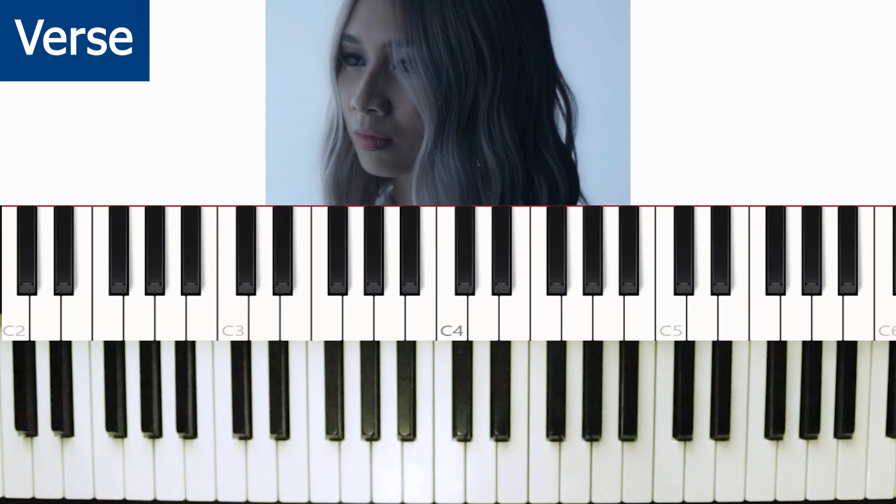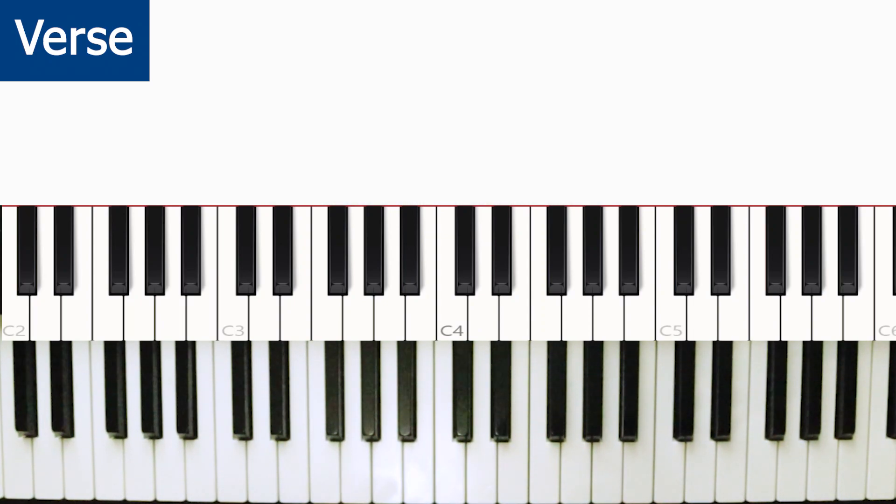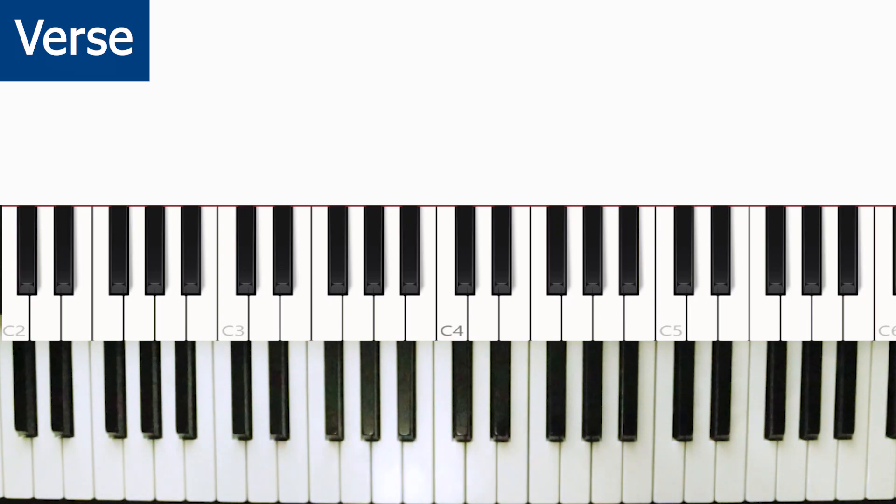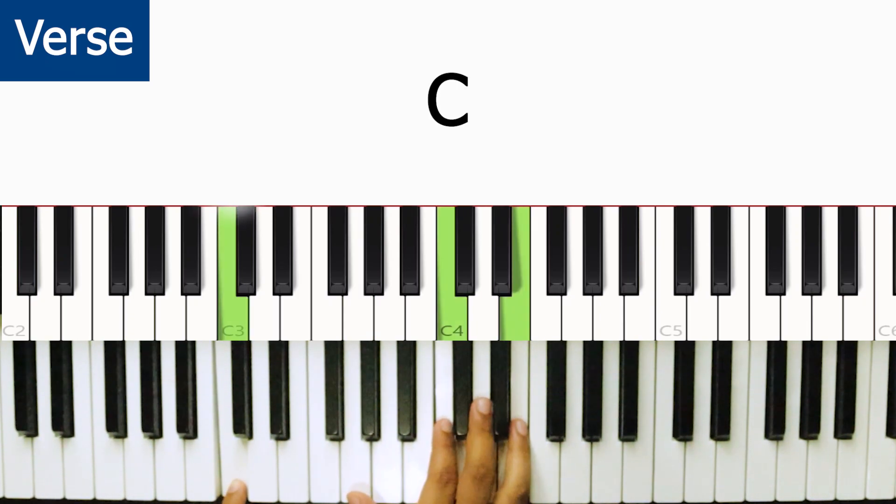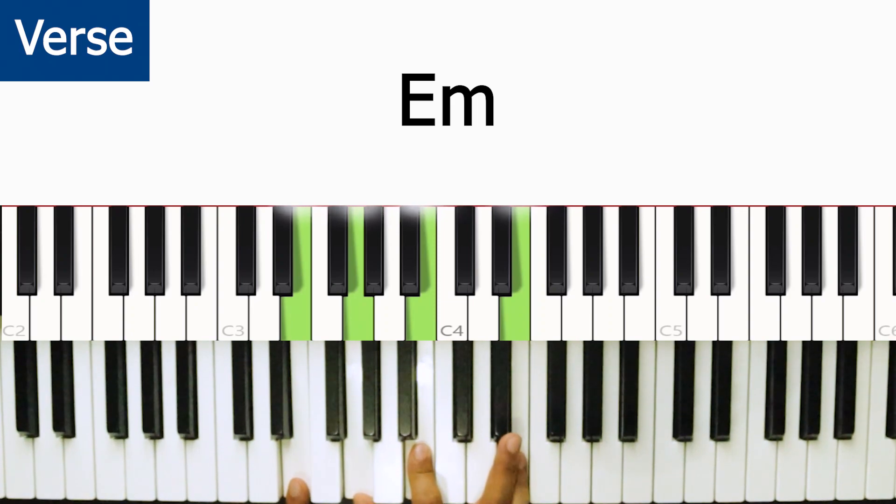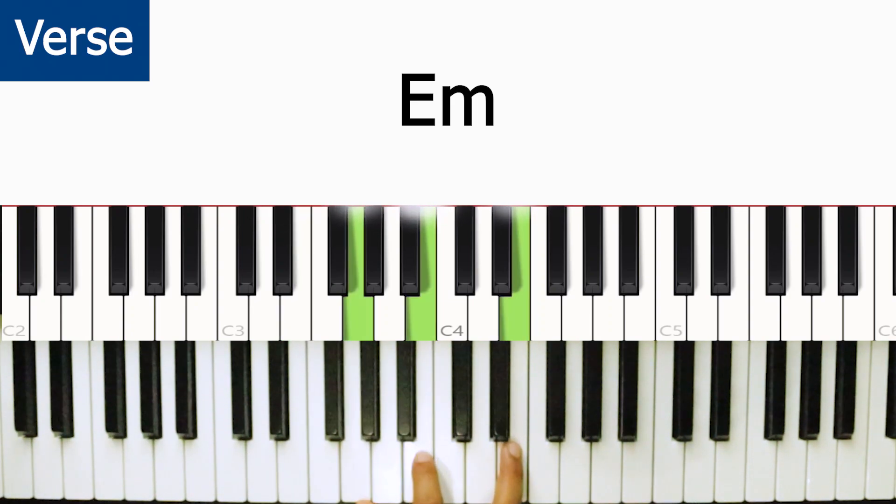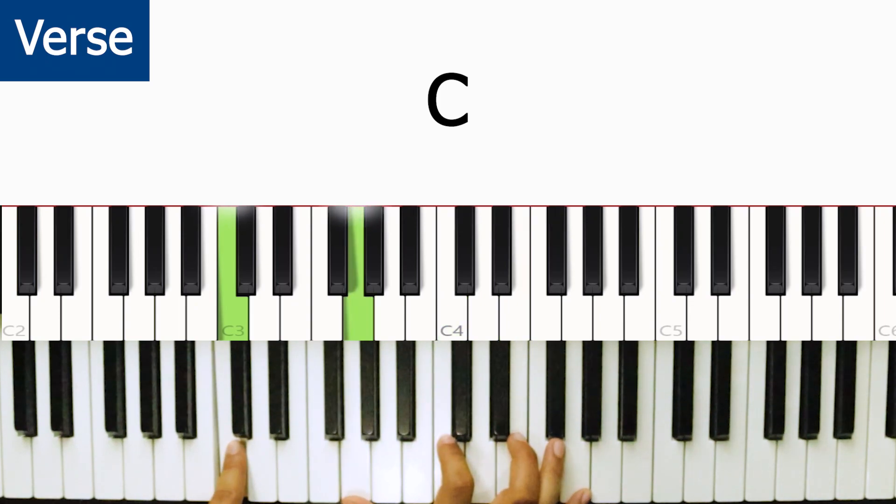Okay so that is the verse. Later the verse is two times, then to pre-chorus, then to chorus. So the verse is like this. C, E minor. Like this. Then back to C again. One, then two.